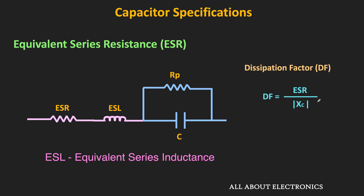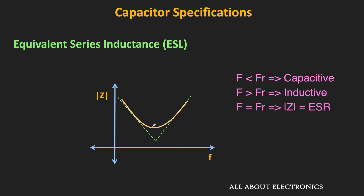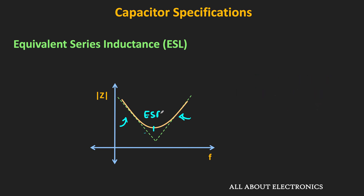Speaking about the ESL — effective series inductance — at low frequencies of operation, the effect of ESL on the capacitor is negligible. But when the capacitor is operated at high frequencies, the effect of ESL comes into the picture. Because of this series inductance, the capacitor also has a series resonant frequency. Below this resonant frequency, the behavior is capacitive; beyond this resonant frequency, it behaves like an inductor. At resonance, the impedance of the equivalent circuit equals the ESR. So this series inductance can be problematic at high frequency operations, and while selecting a capacitor for a high frequency application, one should also look for ESL.